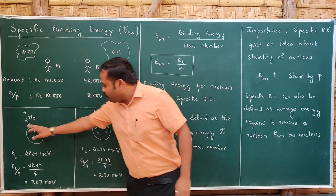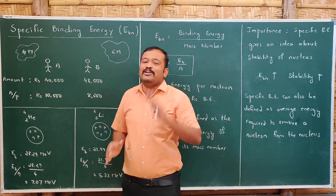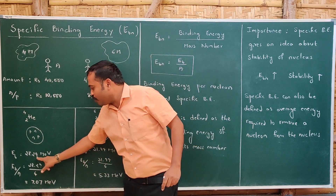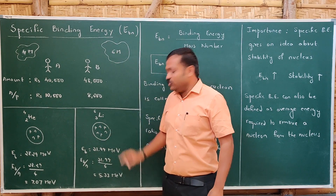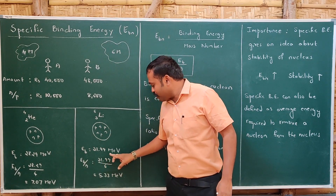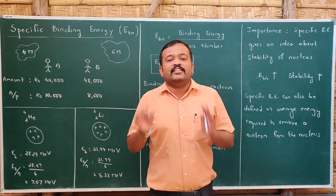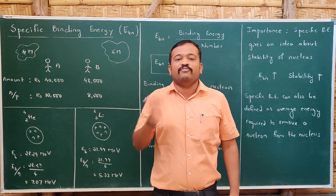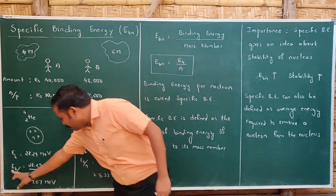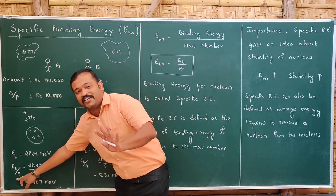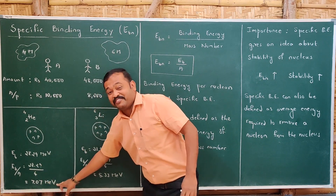The binding energy we have calculated — what is binding energy? It is the energy required to bind the nucleons together to form a stable nucleus. The binding energy of Helium is 28.29 MeV. Now binding energy per nucleon — that is the number of members, represented by mass number A — gives us EB divided by A: 28.29 divided by 4 equals 7.07 MeV.